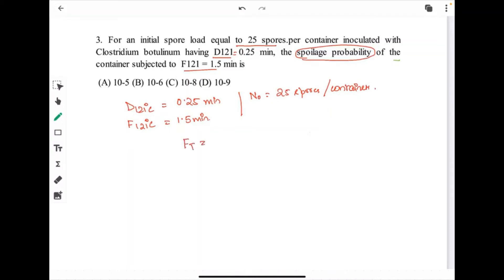From the formula Ft equals Dt log(N0/N). So, F is 1.5 equals 0.25 minute into log(25 divided by N). 1.5 divided by 0.25 is 6 equals log(25/N). We have to remove this log. It will be 10 to the power 6 equals 25/N. So, N will be 2.5 into 10 to the power minus 5, which can be written as 25 into 10 to the power minus 6.